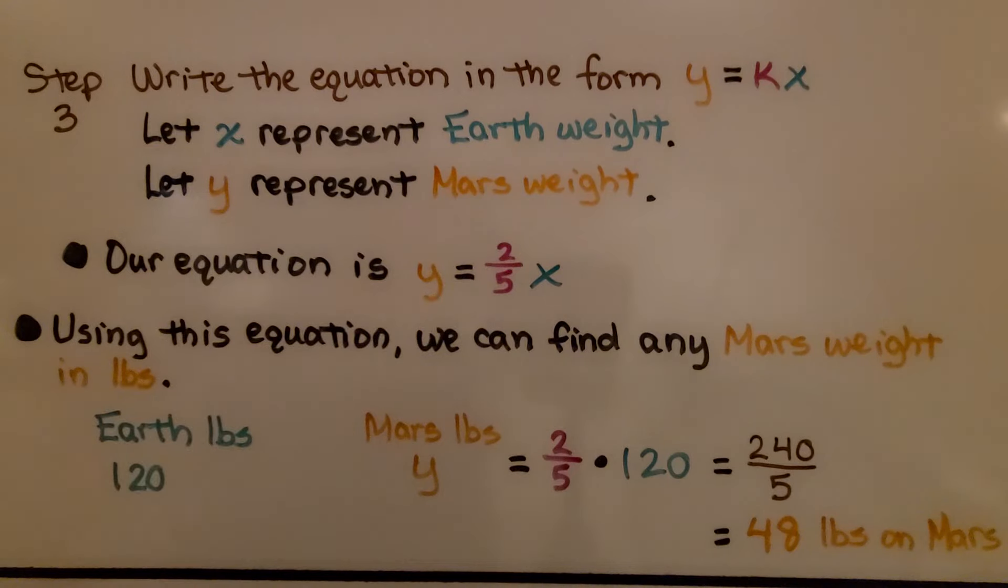Using this equation, we can find any Mars weight in pounds. So if we had an Earth weight of 120 pounds, we would just put that into the equation. The Mars weight y would be equal to (2/5) times 120, that would be 48 pounds on Mars.